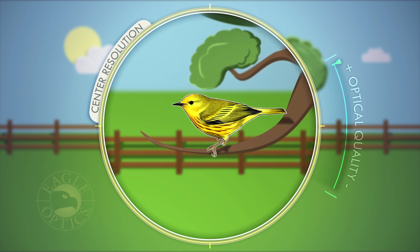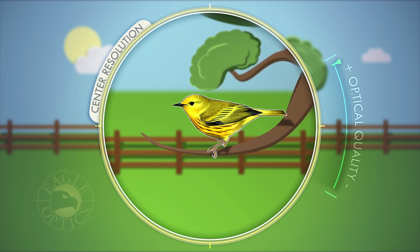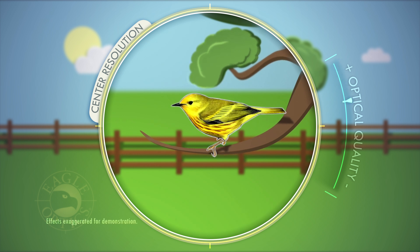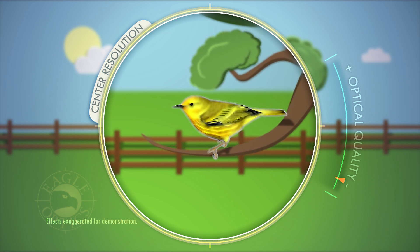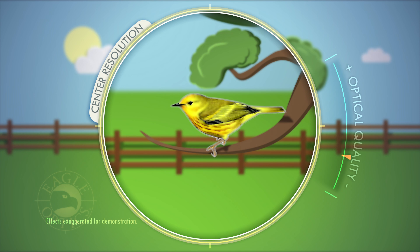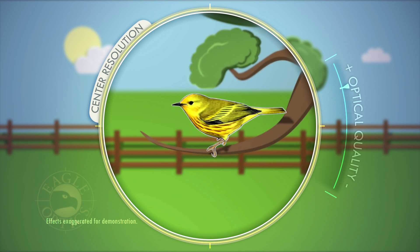In any optic, the best resolution will be in the center of the field of view. But as we lower the glass quality, you will start to notice a decrease in clarity. The warbler's feathers begin to blend into one another, and small details disappear. Generally, more expensive optics using higher grade glass will provide crisper, clearer images, allowing you to see a higher level of detail.